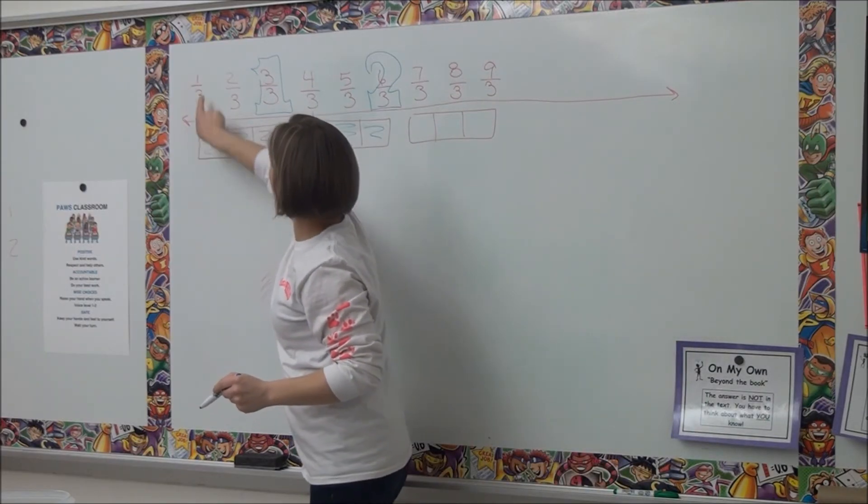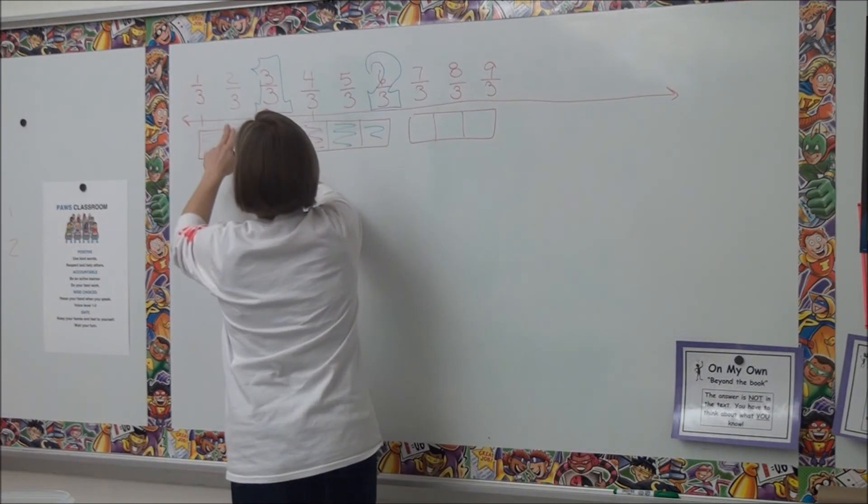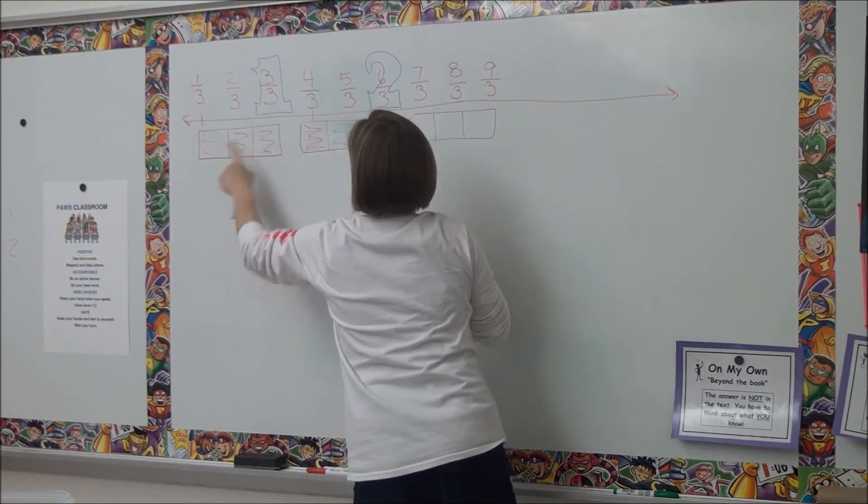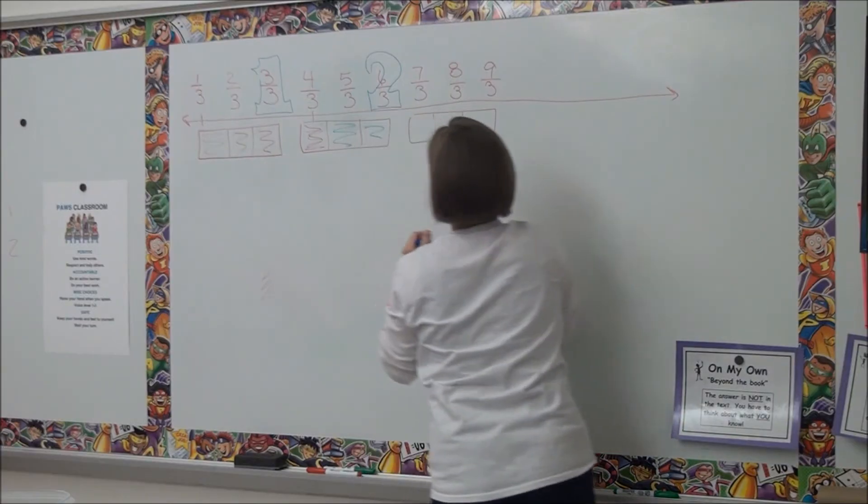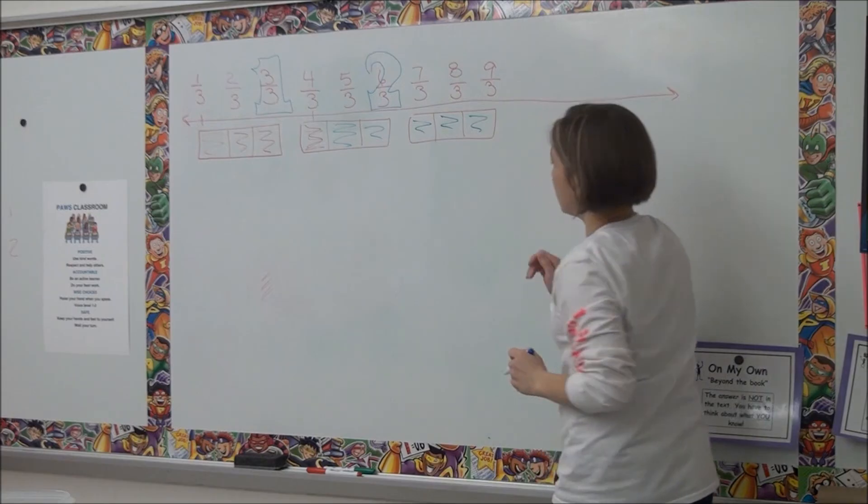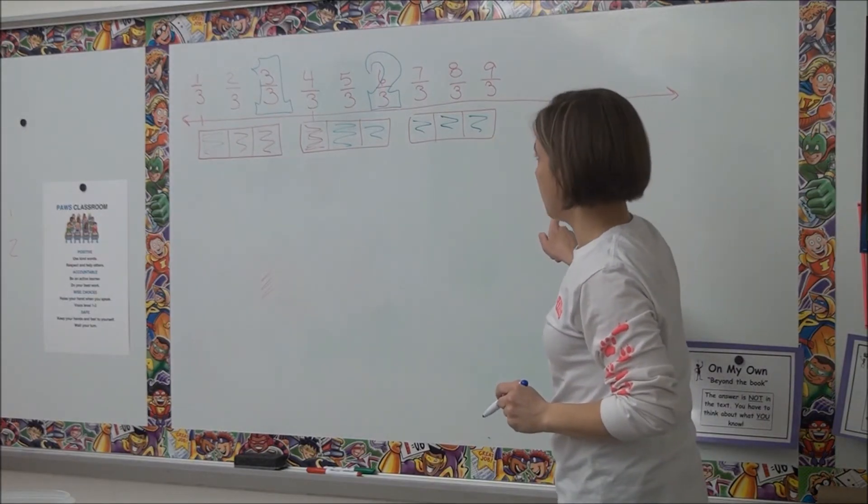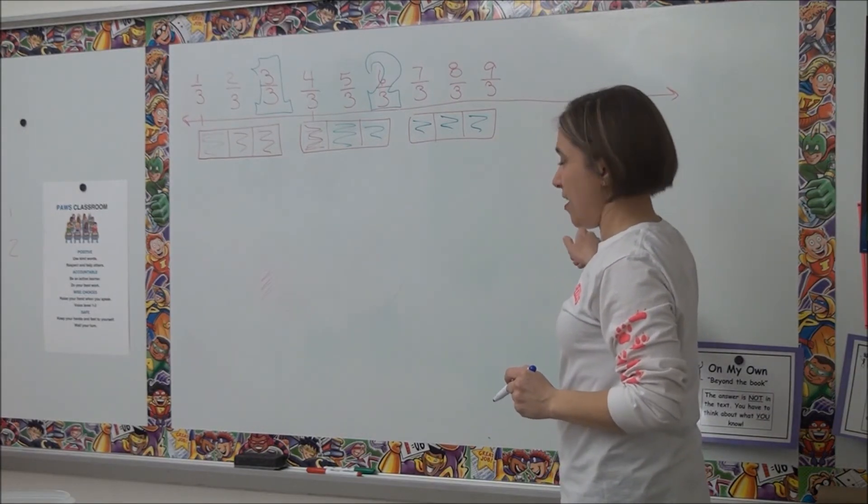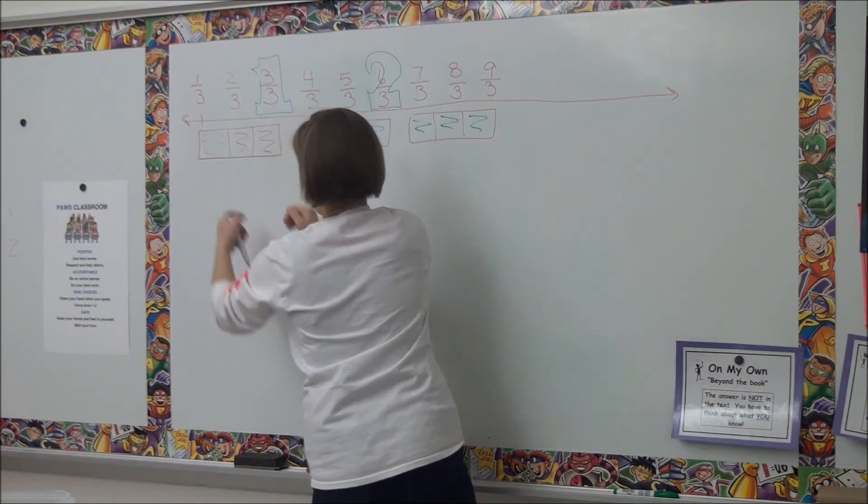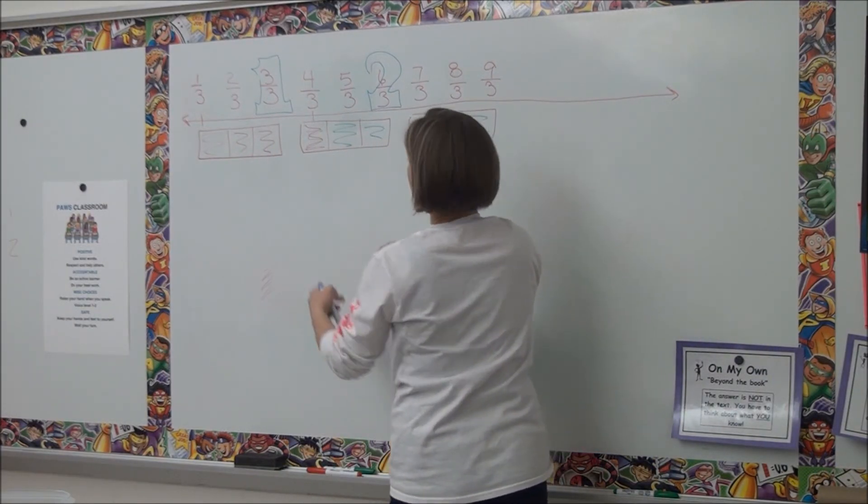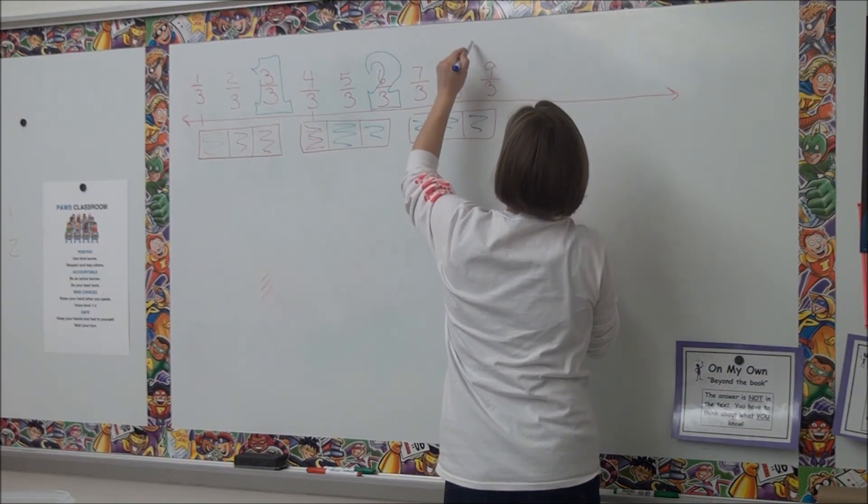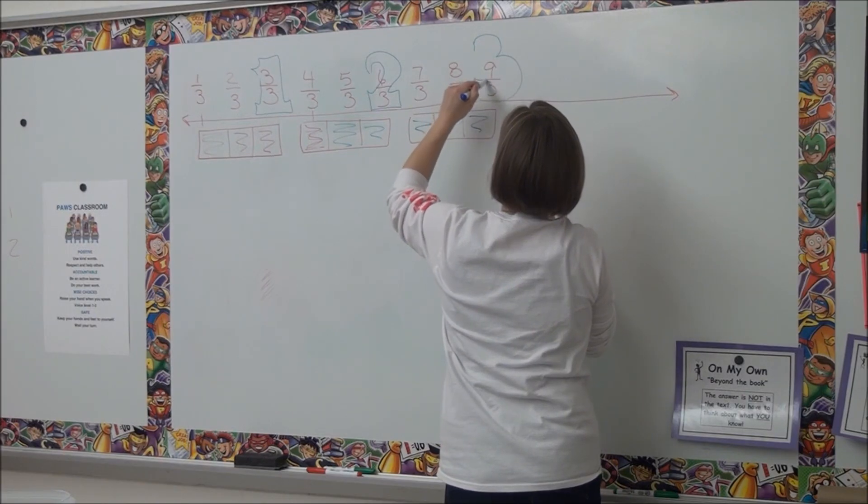Let's count this again. One third, two thirds, three thirds, four thirds, five thirds, six thirds, seven thirds, eight thirds, nine thirds. Now let me ask you this. Who said that? Nine thirds is three holes? Well, let's see. I've got three of those thirds. Yeah. I've got six of those thirds, two holes. Yeah, you're right. This is three. Three holes.